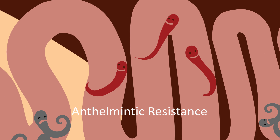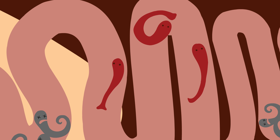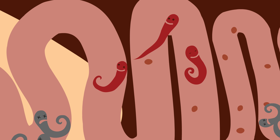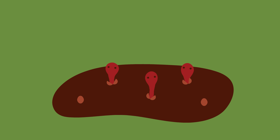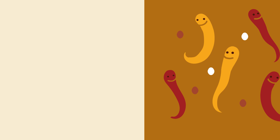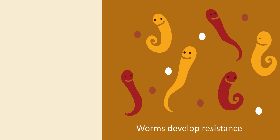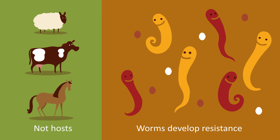The resistant worms carry mechanisms that allow them to survive. The resistant adult worms lay eggs, which are shed onto pasture in the faeces. The eggs hatch and develop to become resistant worms that will infect or reinfect animals and survive treatment repeatedly. It is important to remember that it is the worms that are resistant to the treatment, not the host animal.